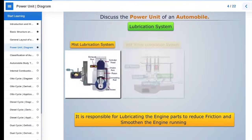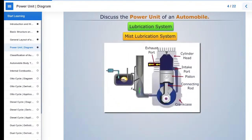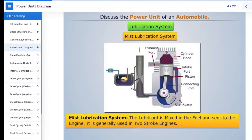Mist, wet sump, and dry sump lubrication system. In mist lubrication system, lubricant is mixed in the fuel and sent to the engine. It is generally used in two-stroke engines.